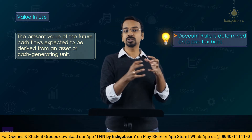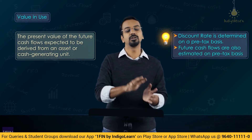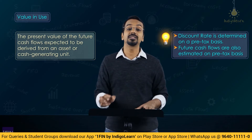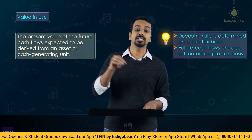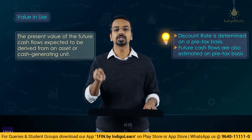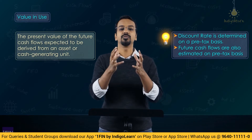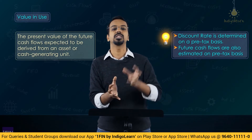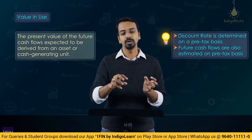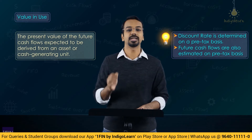The cash flows we are talking about will also be pre-tax cash flows. In FM capital budgeting, you would consider post-tax cash flows and a post-tax discount rate. But here we will consider pre-tax cash flows and pre-tax discount rates. The reason is we are comparing value in use with the carrying amount, and the carrying amount does not have any impact of taxation. So we use pre-tax cash flows and pre-tax discount rates.